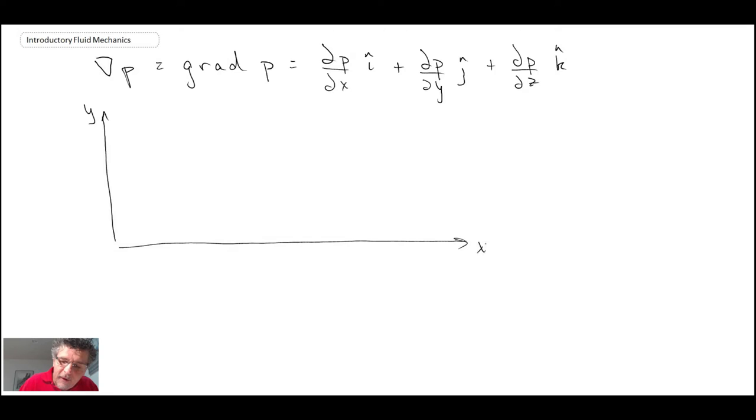So here we have our coordinate system. And what we're going to do, we're going to assume that we have iso lines, so lines of constant pressure in this field. So we'll have P1 equals a constant. Then we'll have another line, that would be P2. And finally we'll have another line up here, that would be P3.